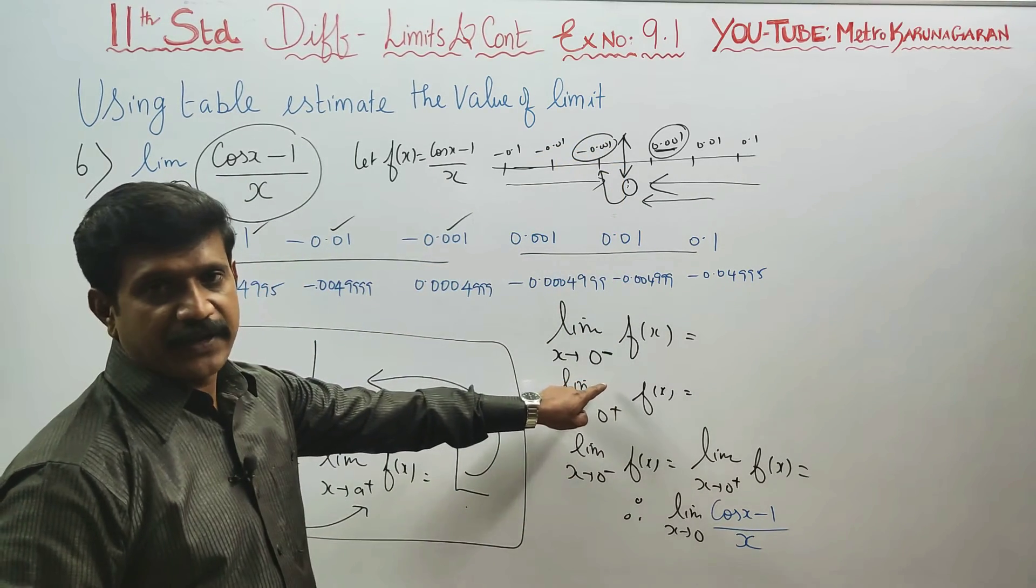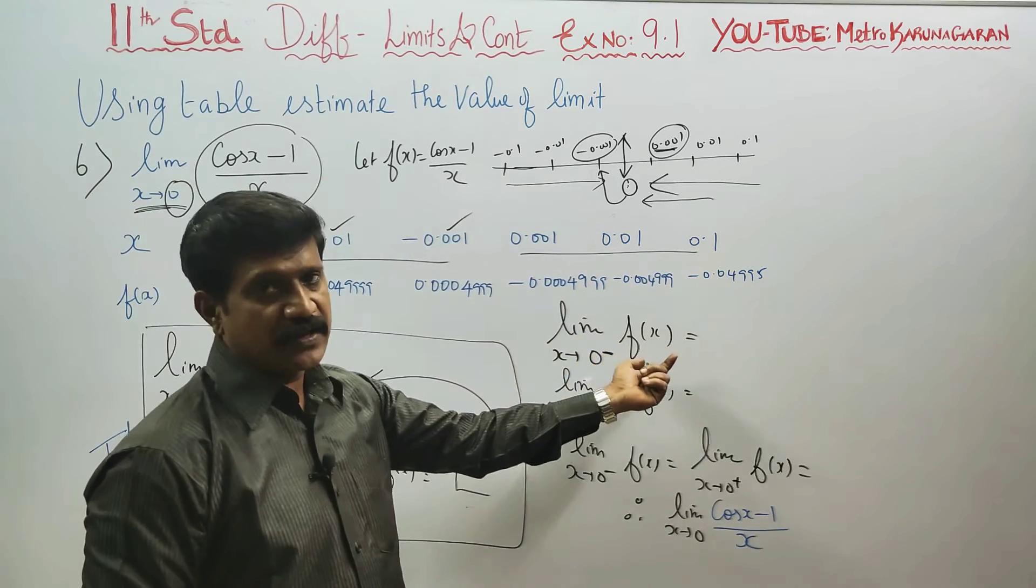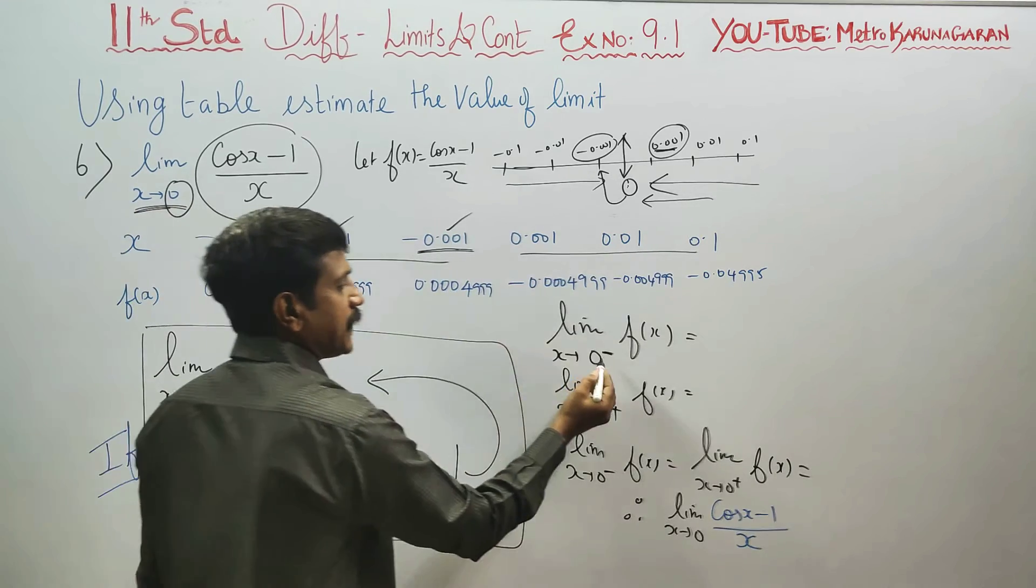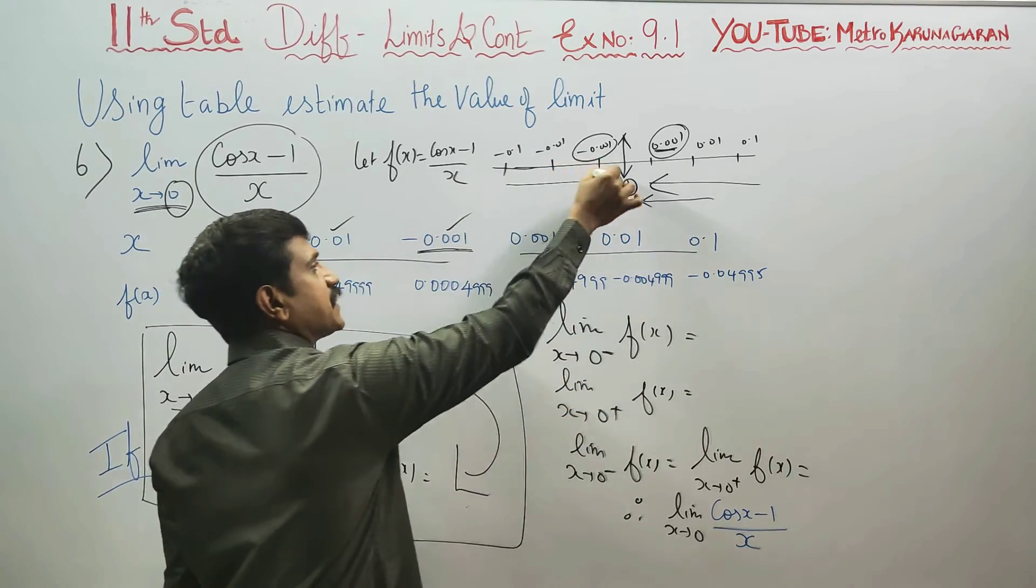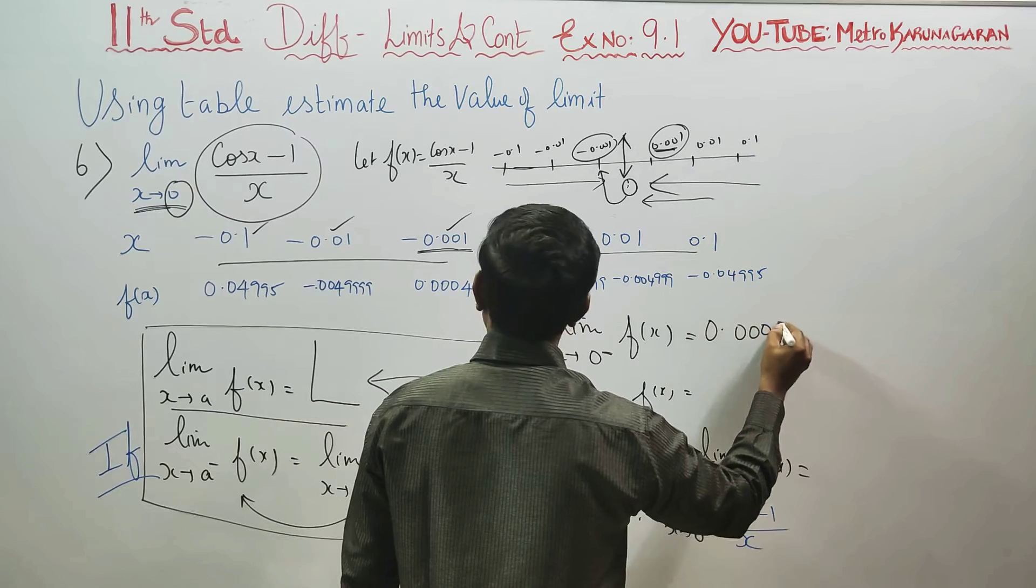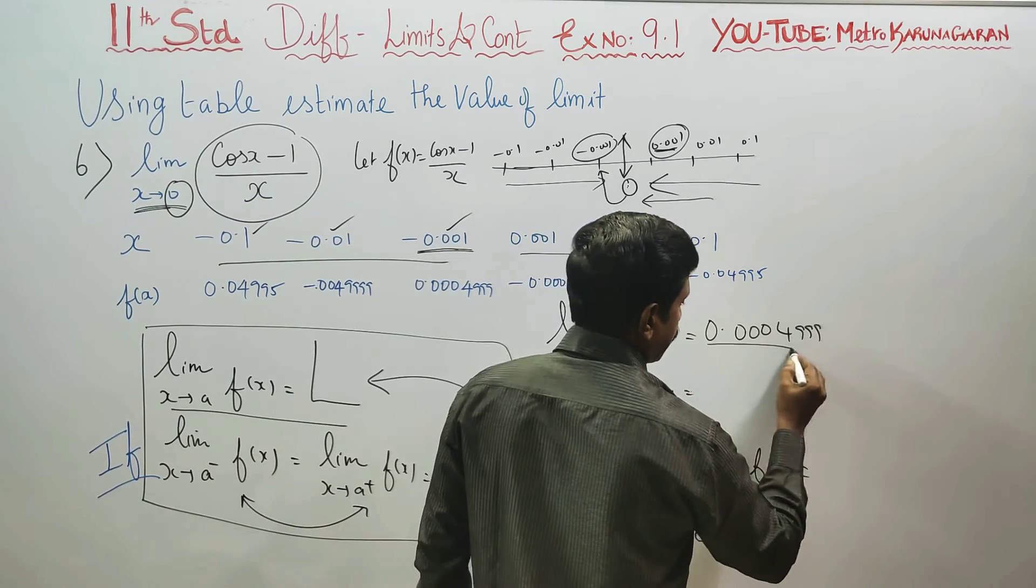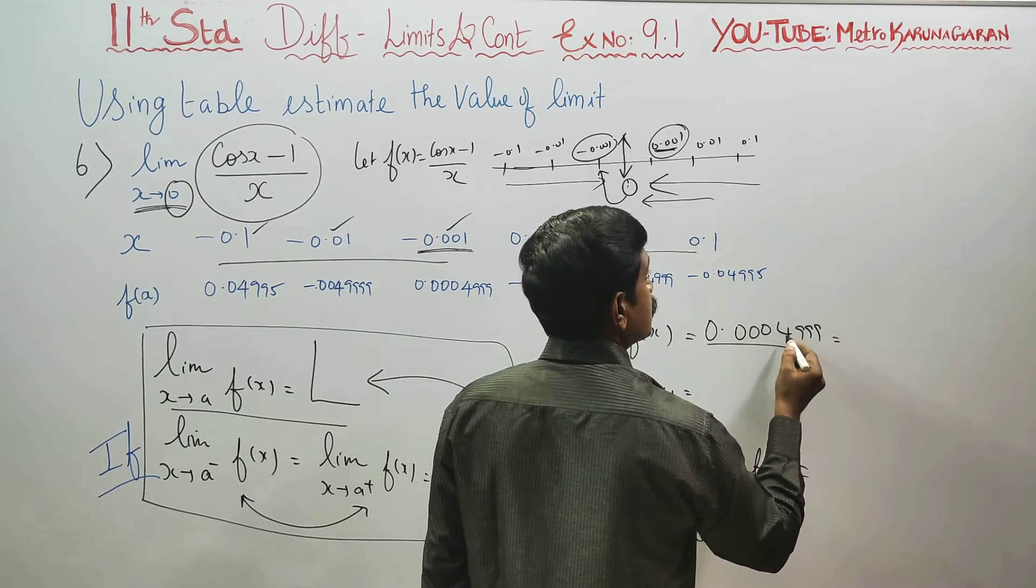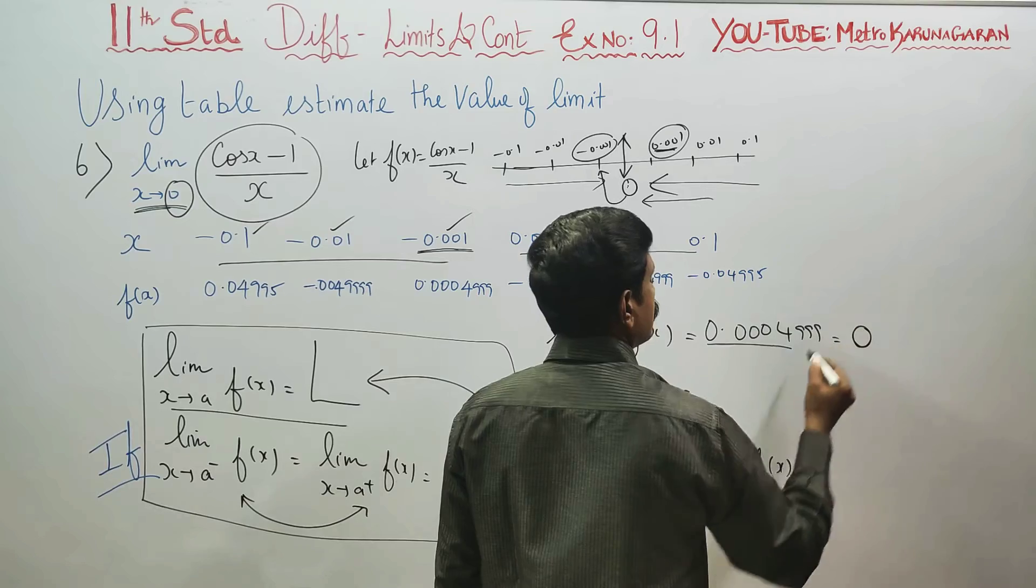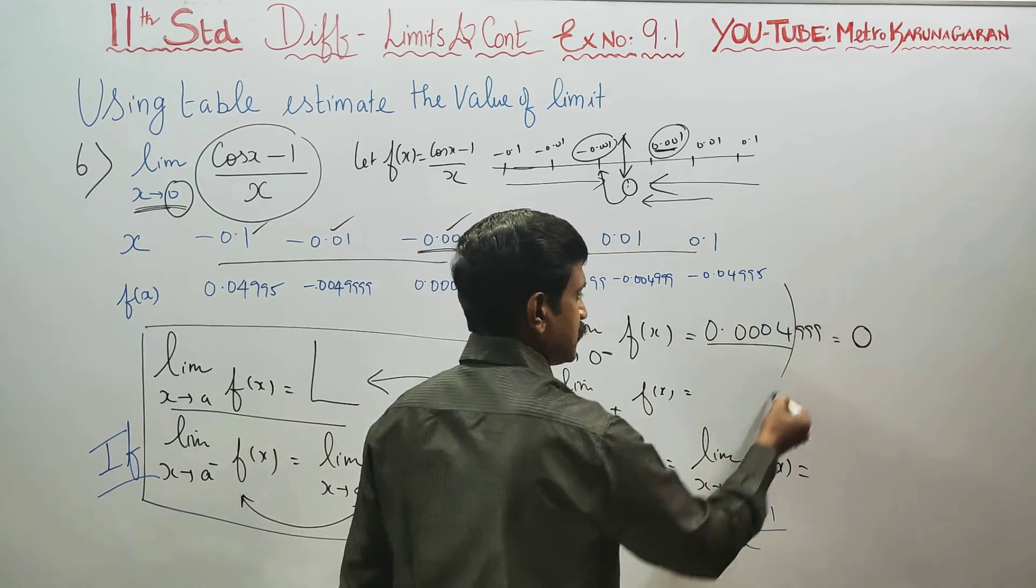First, the left hand side approach. The close value is on the negative side. Minus symbol means left hand side of 0. The close value is 0.0004999. If you round off to 4 digits, the approximate answer is 0.